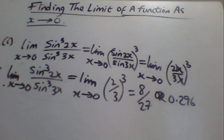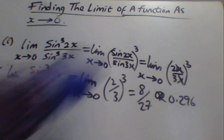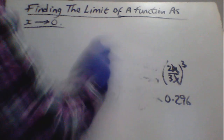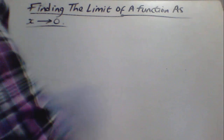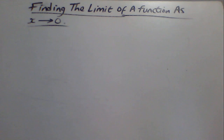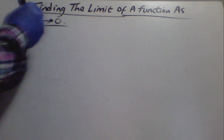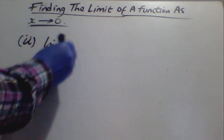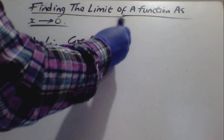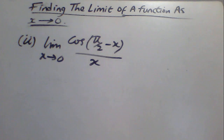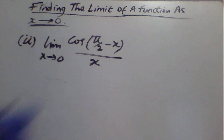Having solved the first one, the next thing we have to do is look at how we can solve the second problem. The second question is: find lim(x→0) of cos(π/2 − x)/x. So how can we solve this limit? For this one, we use L'Hôpital's rule.